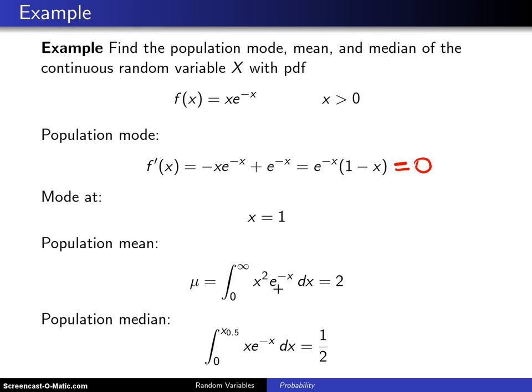Finally, the third measure of central tendency is the population median. The way you find it is to take the area from 0 up to the population median x₀.₅ of the probability density function xe^(-x)dx and set that equal to 1/2. Alternatively, you could have limits from x₀.₅ to infinity. Either way will get you the population median.